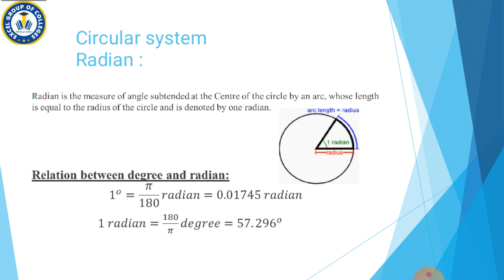Circular system — radian. Ab hum discuss karne ja rahe hain radian ko, jise hum circular system bhi kahenge. Radian is the measure of angle subtended at the center of the circle by an arc whose length is equal to the radius of the circle, and is denoted by one radian. Radian tab banega jab circle ki arc aur circle ka radius dono equal honge, to aap ko one radian milega. Is circle ki arc ko represent kiya gaya hai blue color se, aur circle ke radius ko red color se. Jab blue aur red dono barabar honge length mein, to aap ke paas aayega one radian, jise green se represent kiya gaya hai.